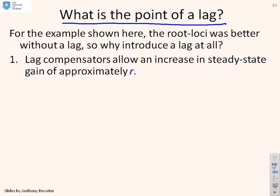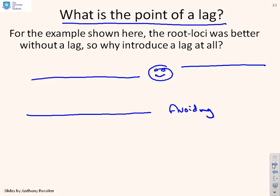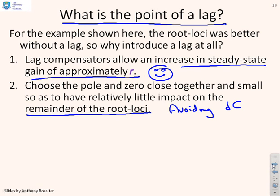Well, here's the key point. What lag compensators do is they allow you to increase the steady state gain by approximately a factor of R. If you choose the pole and zero of the lag to be close together and small, then they will have relatively little impact on the remainder of the root loci. So what you're trying to do is get this benefit here while avoiding delta C, keeping the movement of the centroid small.